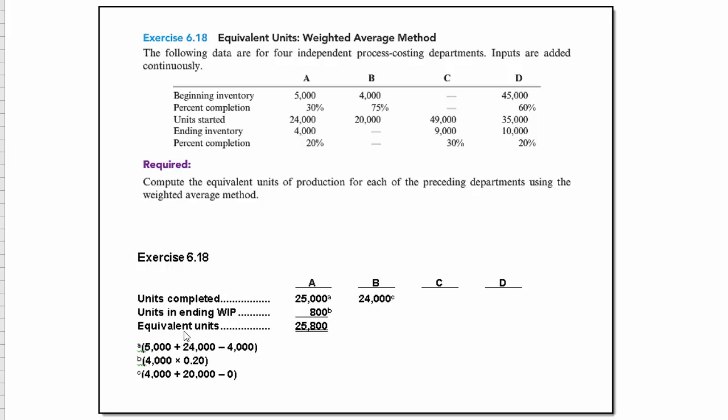So we come up with equivalent units of 25,800. When we take the 5,000 in beginning and the 24,000 that we started less the 4,000 in ending, that just tells us the units that were completed. That's the 25,000. We then have to do the calculation for units in ending work in process.